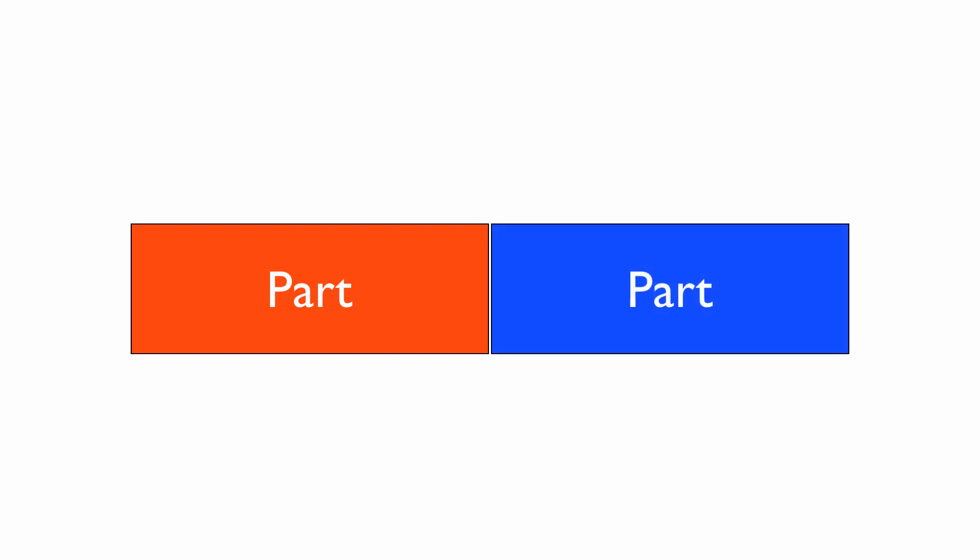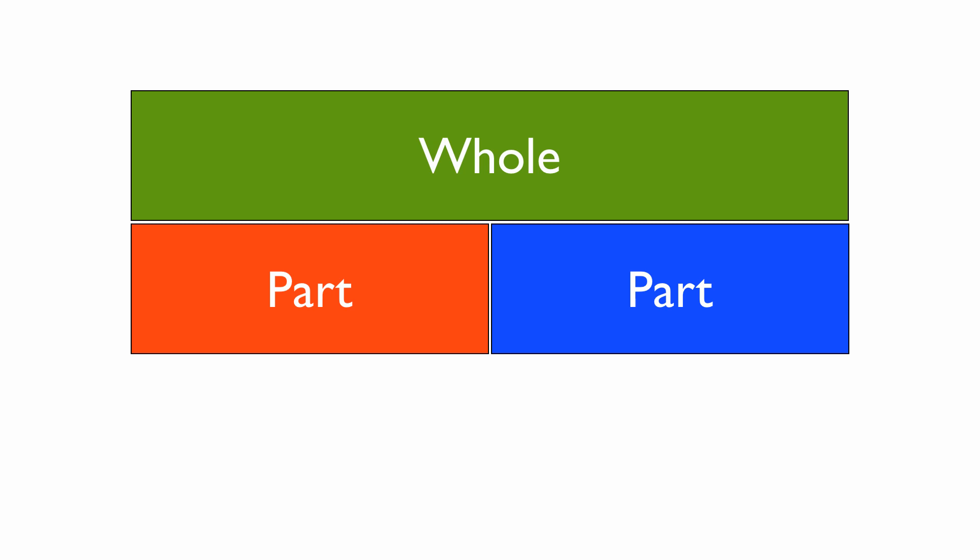Whenever we've got an adding question, we can see it as two parts that add up to give us a whole or a total. So if I have this number sentence 5 plus 3, there's two parts: there's a 5 and there's a 3. And that combining to give us a total, which is 8. Easy.